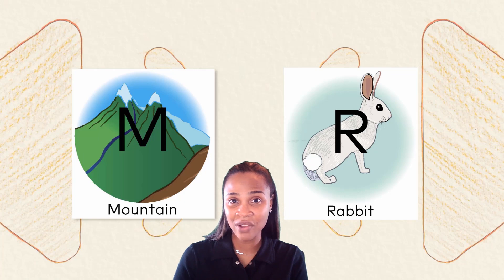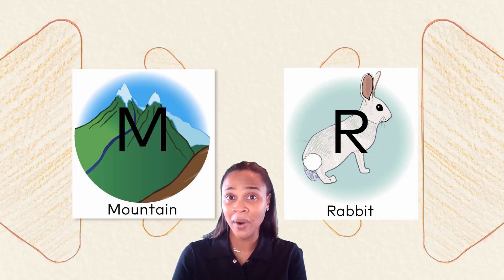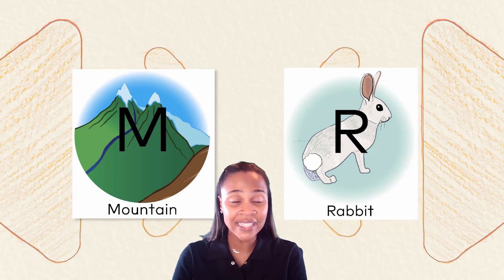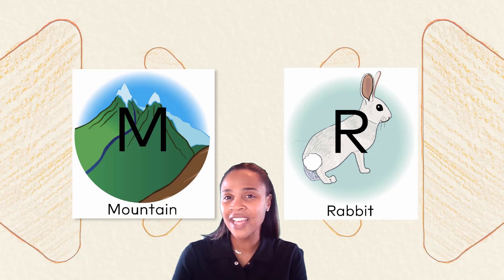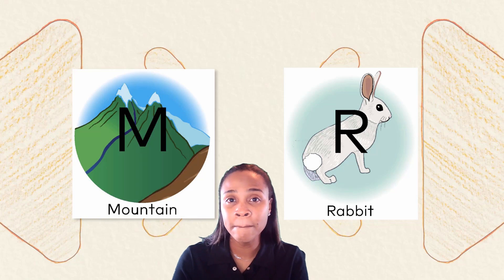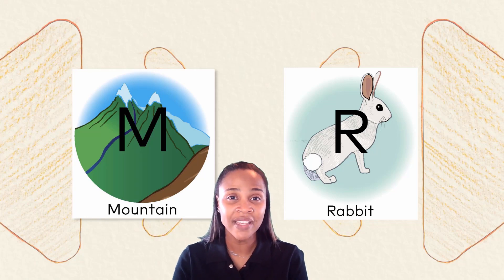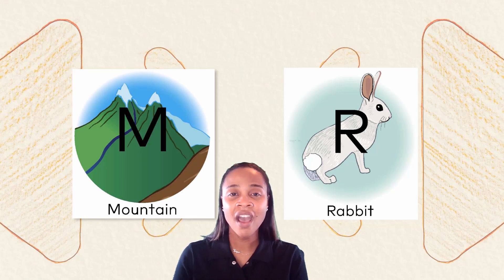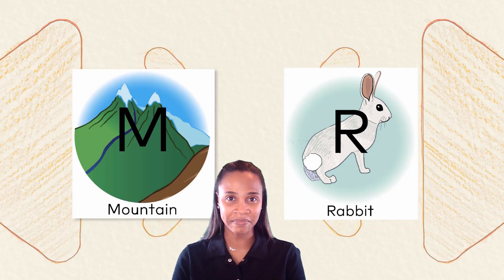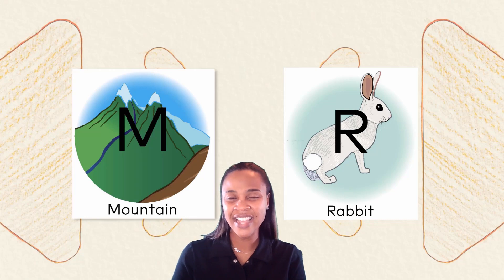Let's say our letter sound chant for the key words we learned for the letters M and R. Remember those key words are the words that help us unlock the sounds — they are the keys to unlocking the sounds for the letters M and R. Ready? I want you to repeat after me. We'll start with the letter M first: M-M mountain. R-R-rabbit. Nice work.